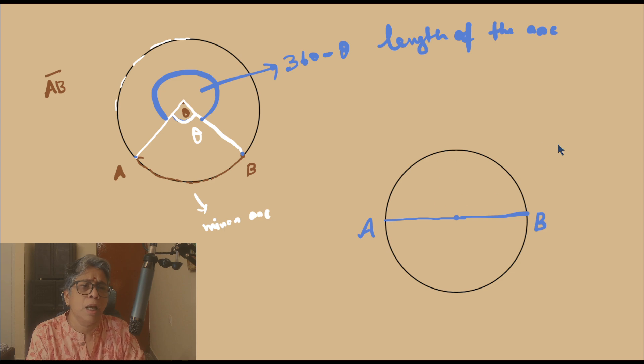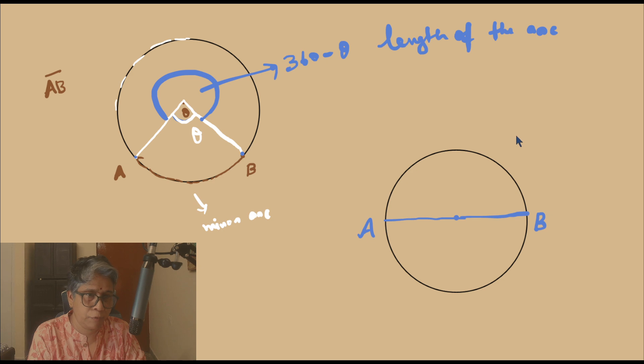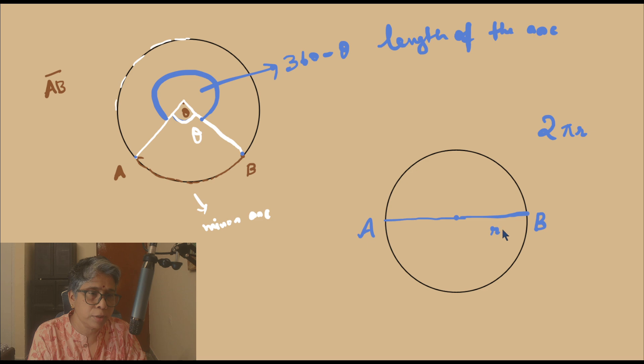Let us say the circumference — the length of the circumference of any circle is 2πr, where r is the radius of the circle.